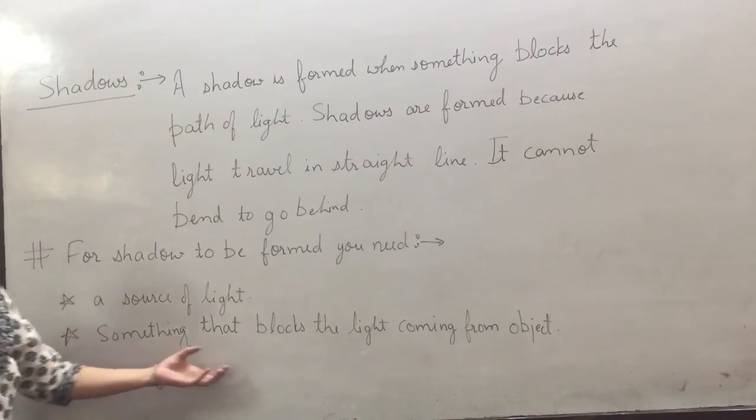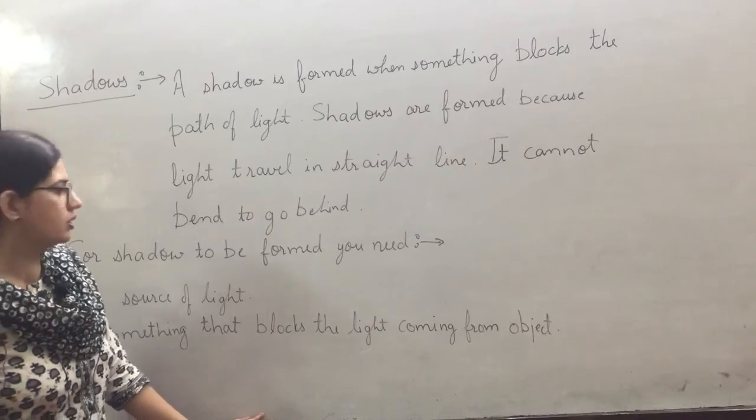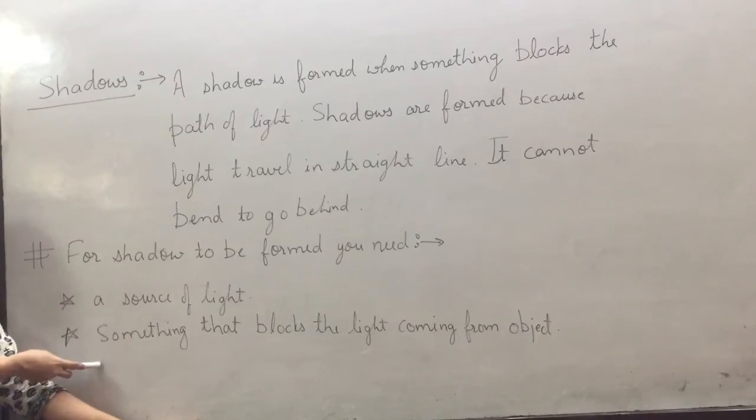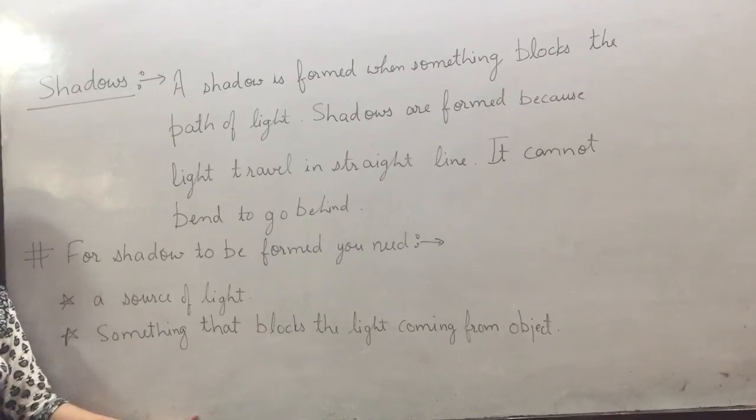Something that blocks the light coming from the object. You need a source of light and another object that blocks the light. Then shadows are formed.